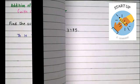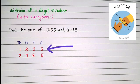the first addend, that is 1255. 5 will be written under ones place, 5 will be written under tens place, 2 will be written under hundreds place, and 1 will be written under thousands place. Let's take the second addend